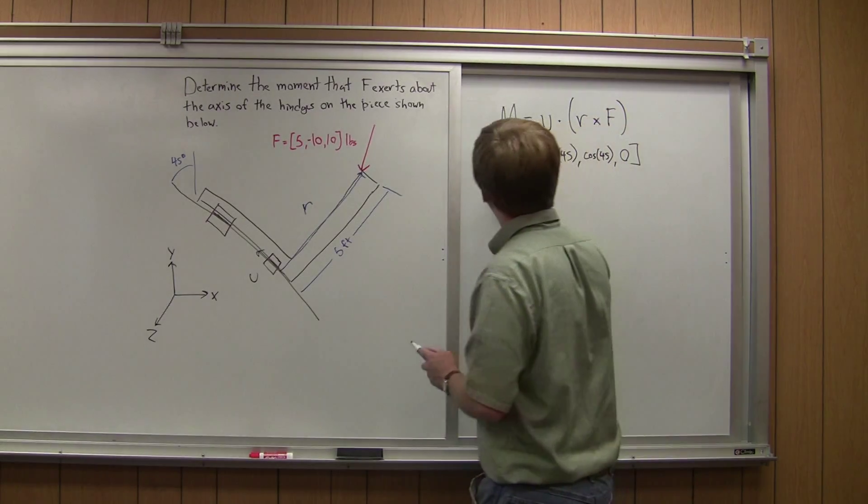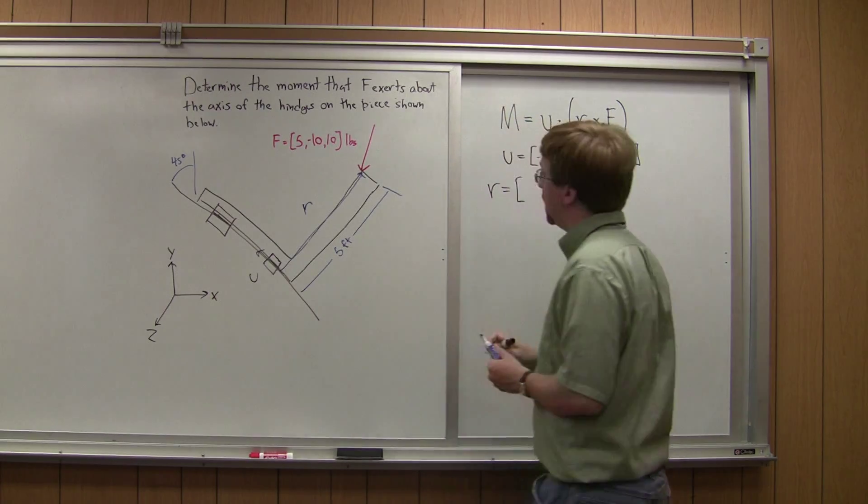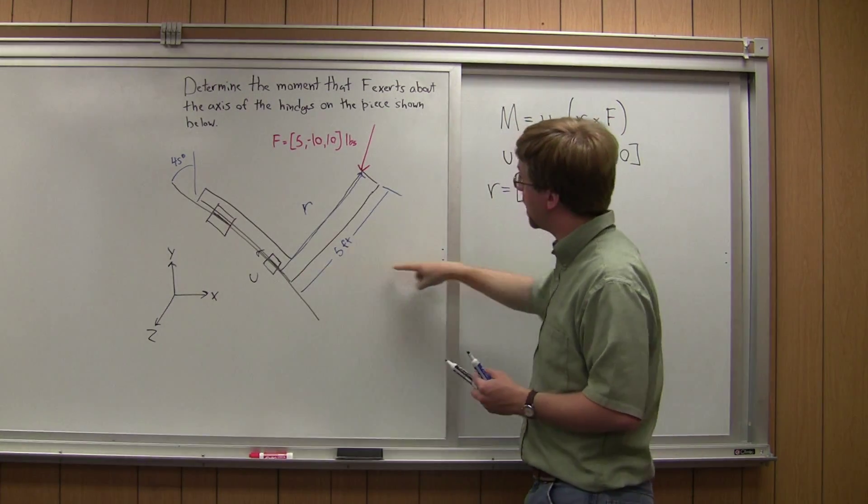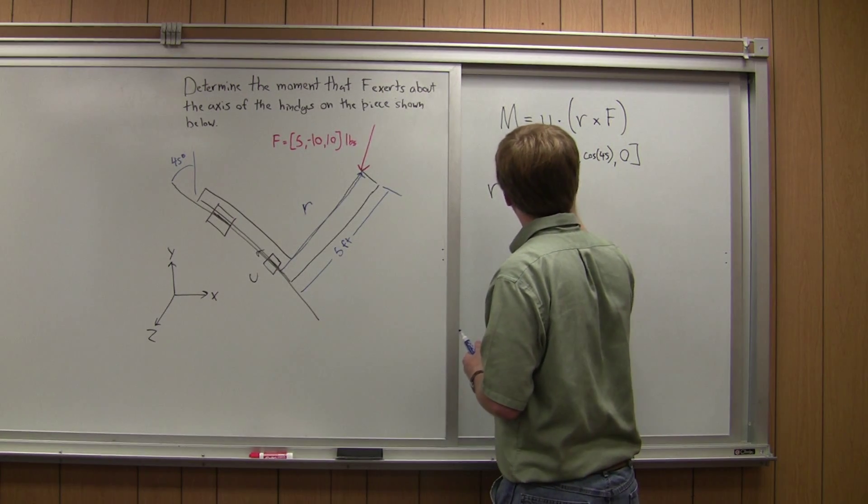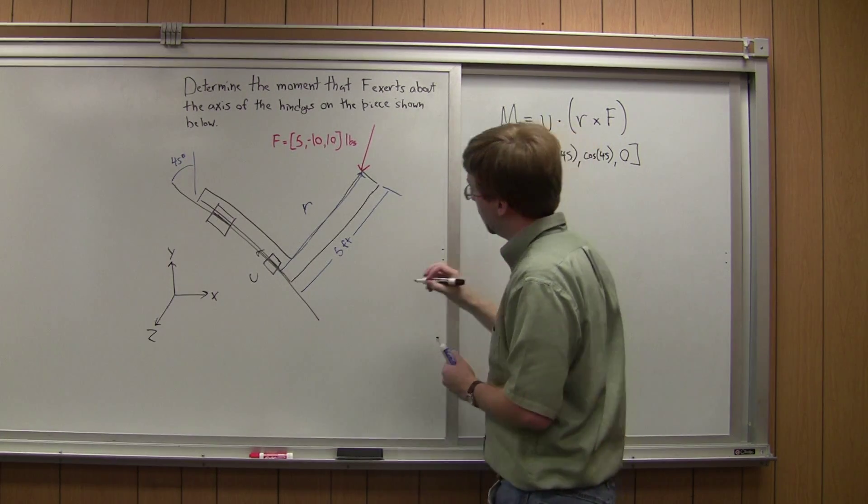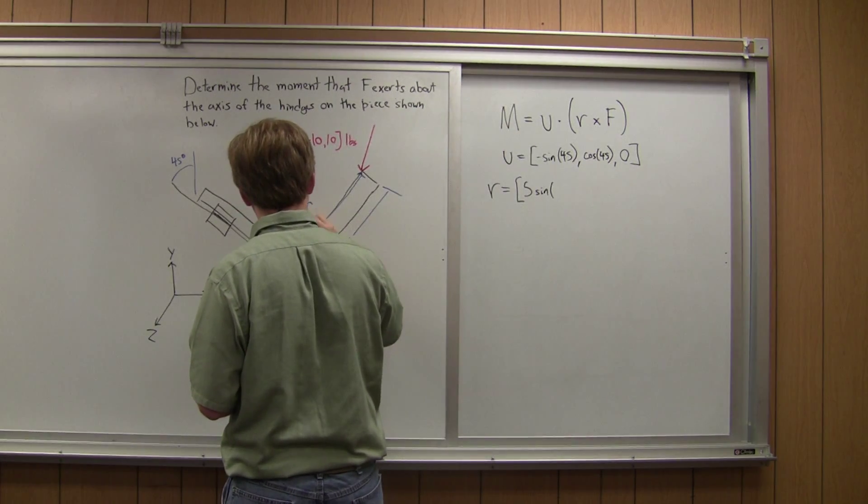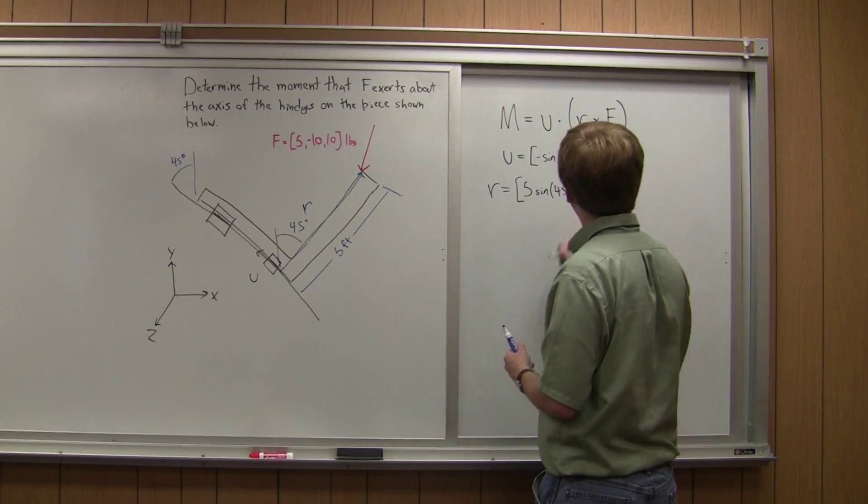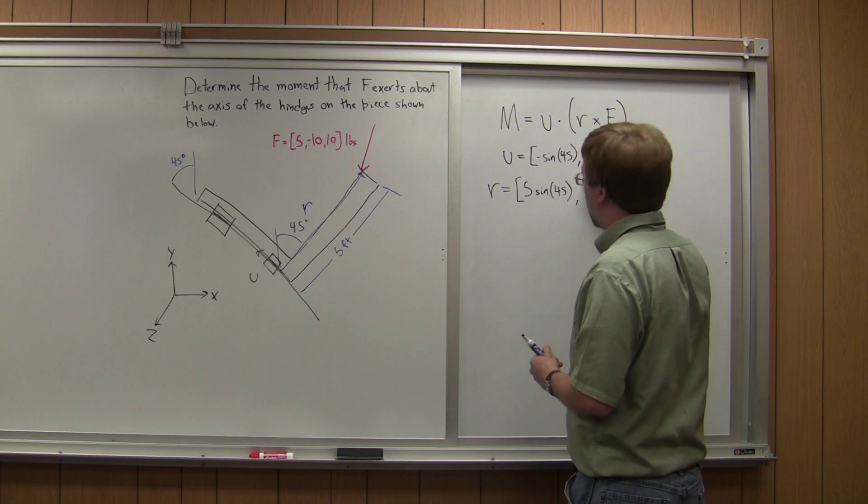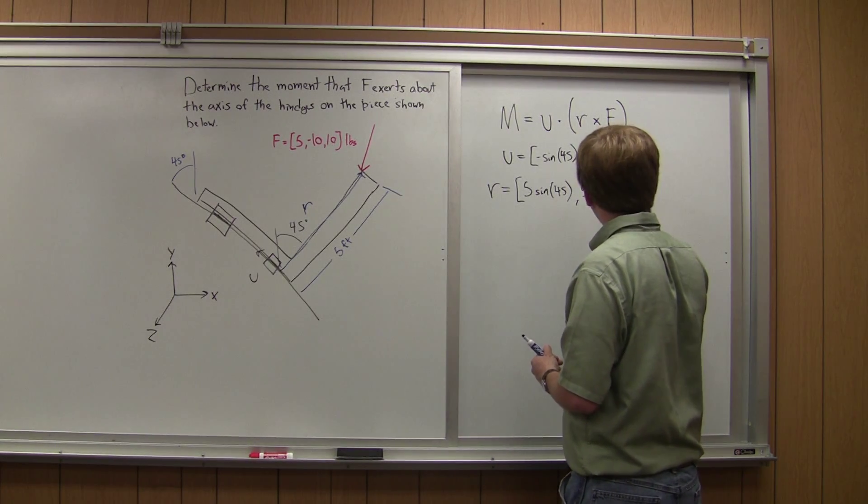So R, it's going a total distance in the x direction of 5 times the sine of 45. Since we know that this is also a 45 degree angle. It's going in the y direction 5 cosine 45.